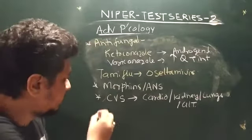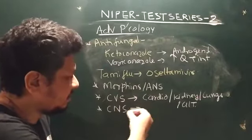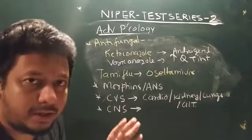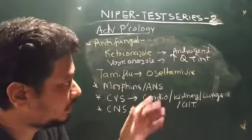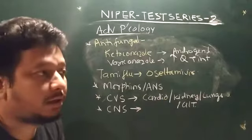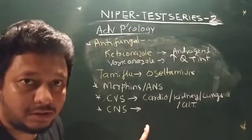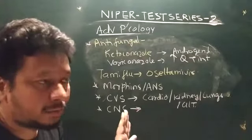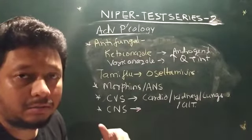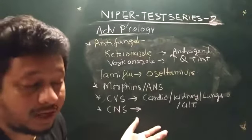CNS-acting drugs are the next topic. The mechanism of action and side effects are relatively easier to understand because conditions like Parkinson's and psychosis are almost pharmacologically opposite. Other CNS topics include depression, Alzheimer's, and Parkinson's disease.